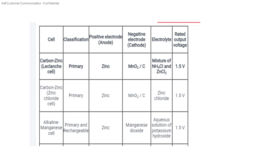The nominal voltage for lead acid cell is 2V. In cell classifications, the carbon zinc cell is a primary cell rated at 1.5V. The positive electrode (anode) is zinc, the negative electrode is carbon, the depolarizer is MnO2, and the electrolyte is ammonium chloride. The rated output is 1.5V.